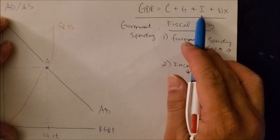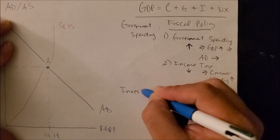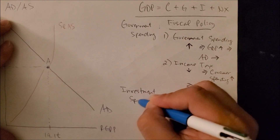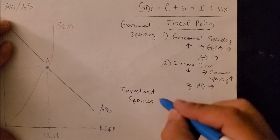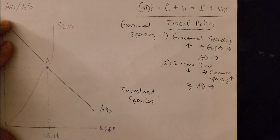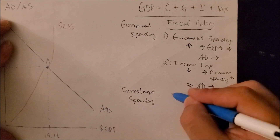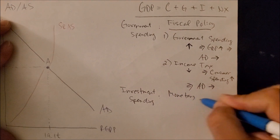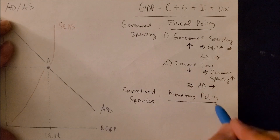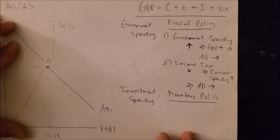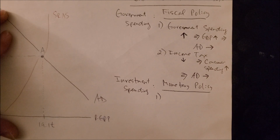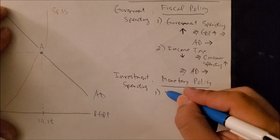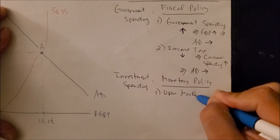The next component is I for investment spending. Investment spending is influenced by a central bank — in the United States, the central bank is called the Federal Reserve, or the Fed. The Fed engages in something called monetary policy. Unlike Congress, the Fed has three tools at its disposal to influence the economy.